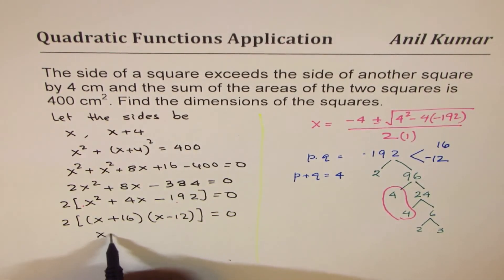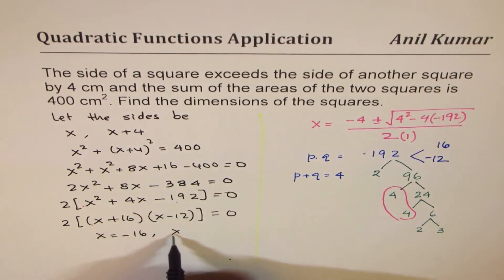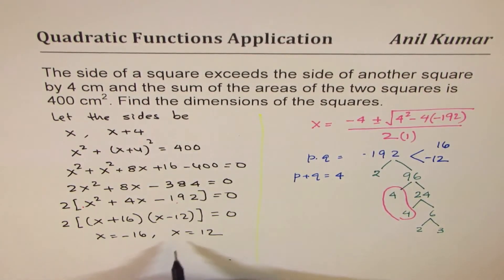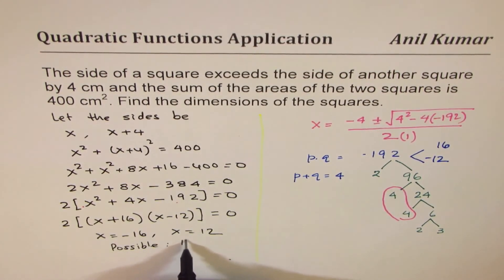Now to make it 0, either x = -16 or x = 12. Now -16 is not possible, and therefore the possible answer is 12. So x is 12.